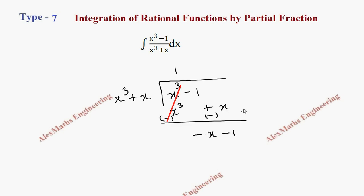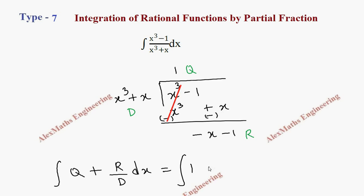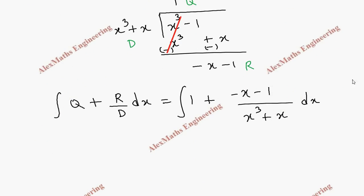The remaining terms are minus x and minus 1, so minus x minus 1 is the remainder. After the long division we have to write in the form: quotient plus remainder divided by divisor. So this will be 1 plus (minus x minus 1) divided by x³ plus x, all times dx.